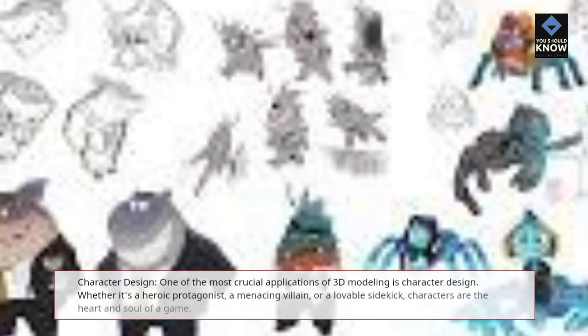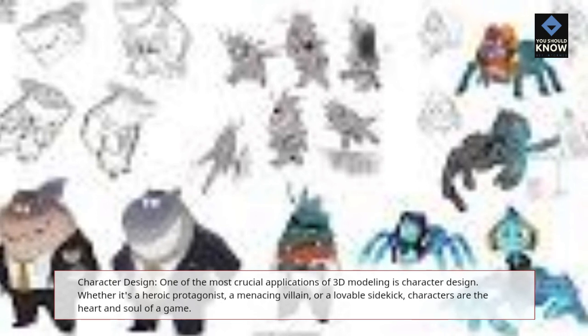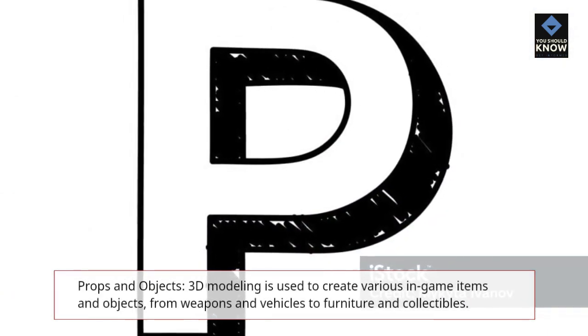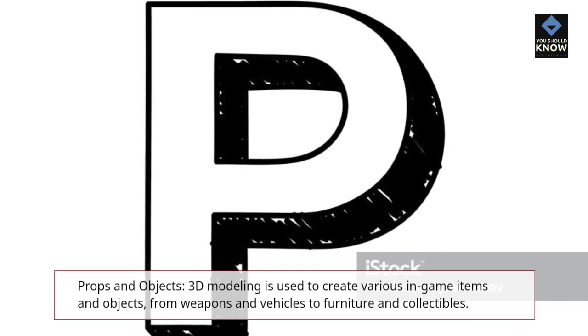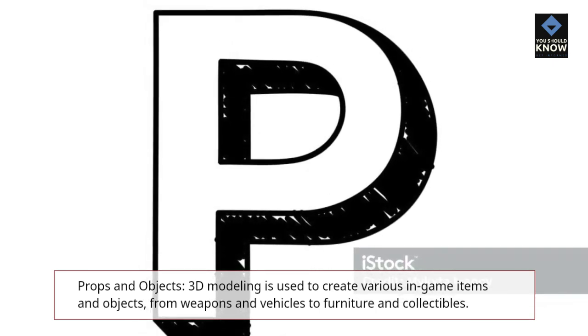Character design is one of the most crucial applications of 3D modeling. Whether it's a heroic protagonist, a menacing villain, or a lovable sidekick, characters are the heart and soul of a game. Props and objects: 3D modeling is also used to create various in-game items and objects, from weapons and vehicles to furniture and collectibles.